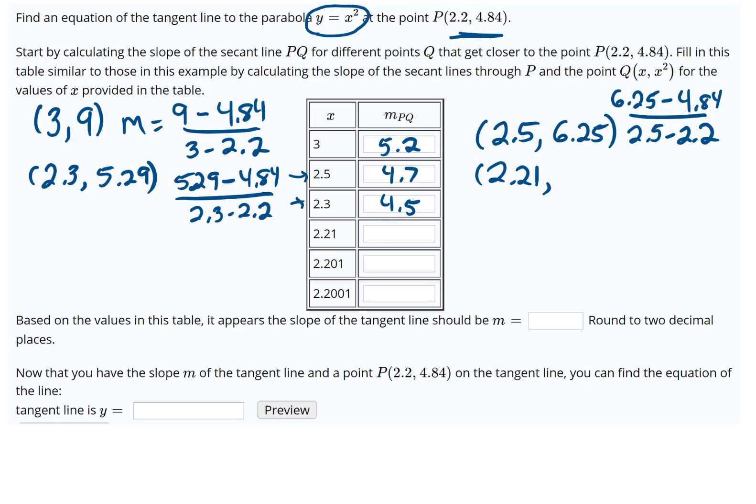Then we've got 2.21—we need to square it, which is 4.8841. Then we're going to do the same thing, so y from the second point minus the y from the first point. Computing that slope would be (4.8841 minus 4.84) divided by (2.21 minus 2.2).